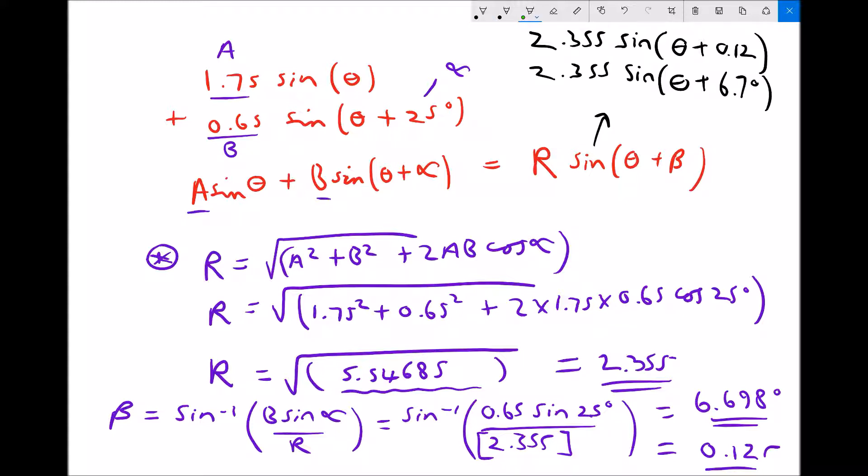Now what you've probably noticed is that we do have a slightly different phase angle here than what we achieved when we used the graphical method. When we used the graphical method we achieved a phase angle of 0.08. Now although they're slightly different, both of those answers would round to 0.1 to one decimal place.